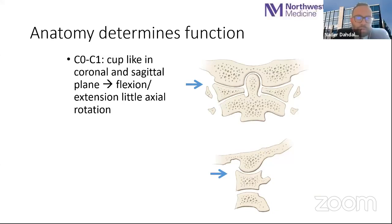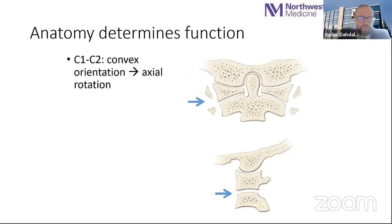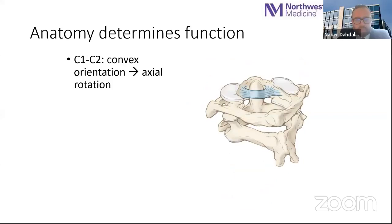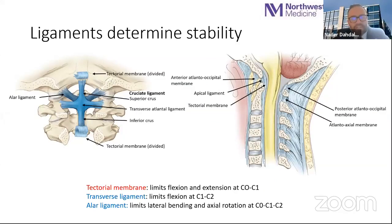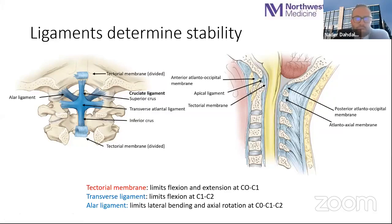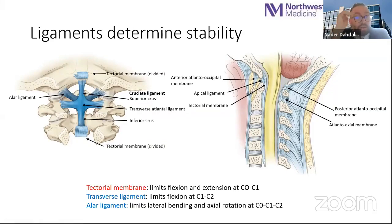The anatomy determines function. The C1-occiput joint is cup-like in the coronal and sagittal plane, allowing for flexion-extension with lateral axial rotation, while the C1-C2 atlanto-axial joint is flat in orientation, allowing for axial rotation about the dens. What stabilizes the CVJ are the ligaments — the joints determine the direction of motion, but the ligaments are the stabilizers. Going from anterior to posterior, they can be divided into four layers.